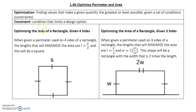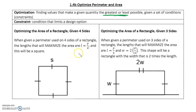Okay, 1.4 optimize perimeter and area. Optimization is finding values that make a given quantity the greatest or least possible, given a set of conditions. These conditions are called constraints — a constraint is a condition that limits a design option. We're going to be focusing on two types, which have been taught since grade 10, so this might be a bit of a review.